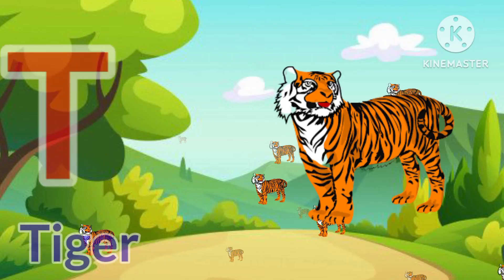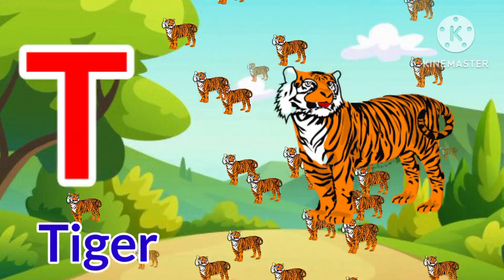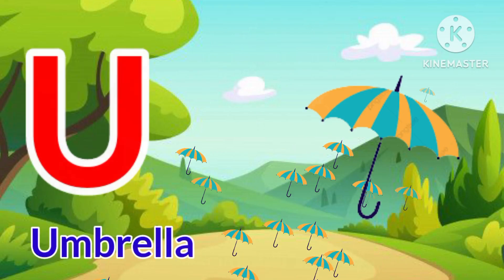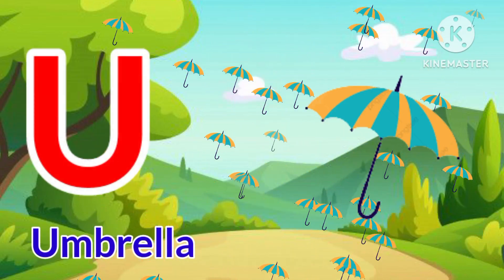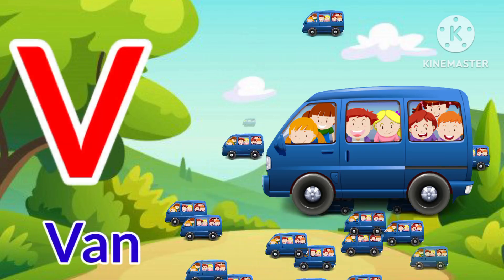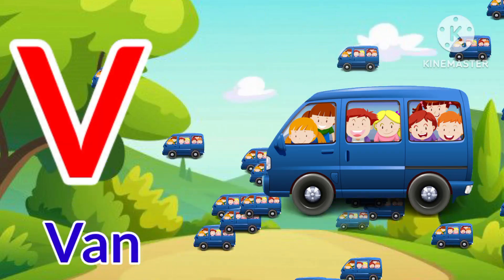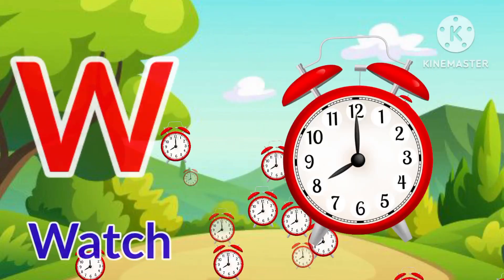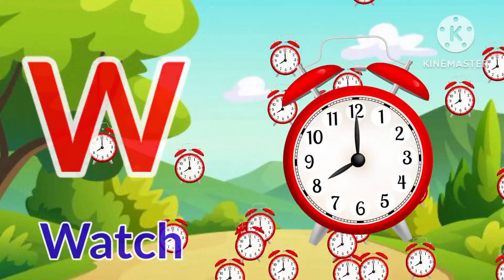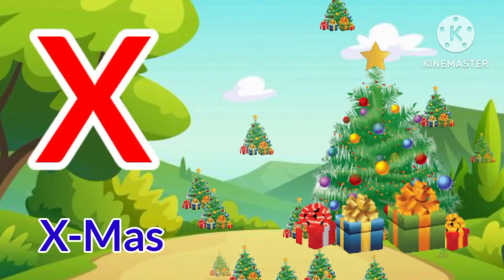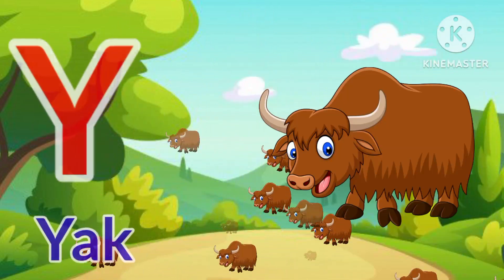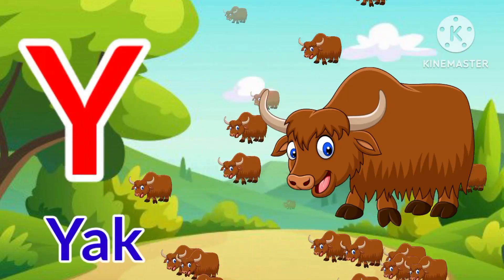T for Tiger, U for Umbrella, V for Van, W for Watch, X for Xmas, Y for Yak.